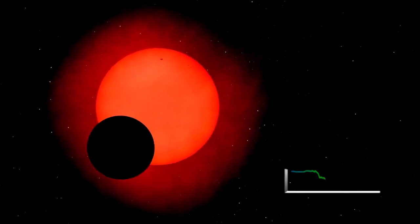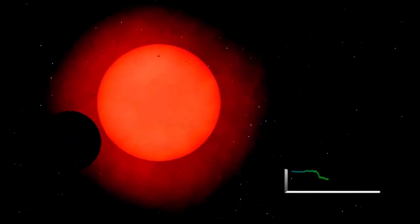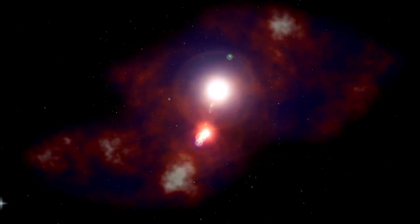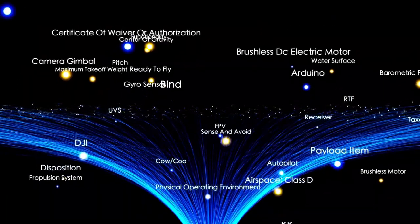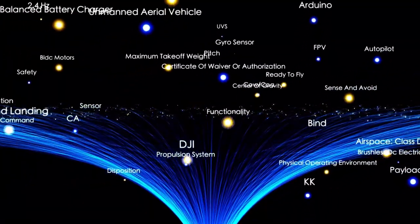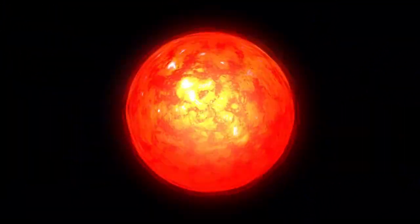It's estimated to be about 700 times the size of the Sun and over 10,000 times more luminous. Red supergiants like this are known for being unstable as they approach their final stages, with fluctuations in brightness being relatively common.